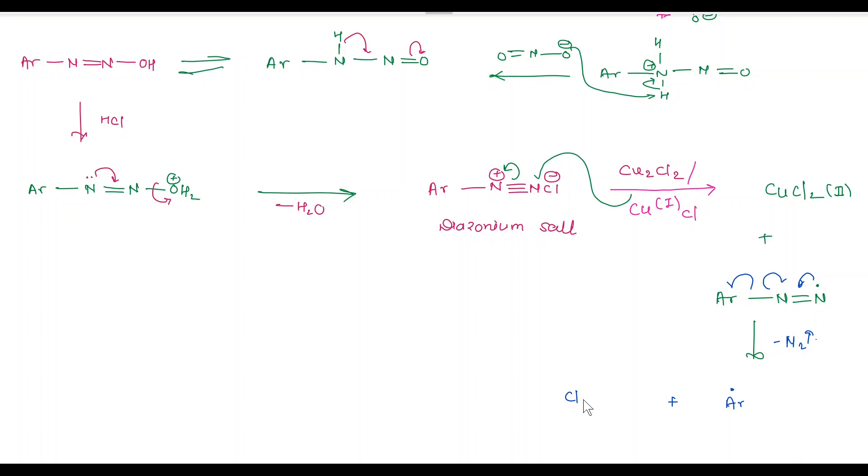Plus here we have CuCl2 in plus 2 oxidation state. So this ar radical abstracts this chloride radical. And here we get ar Cl, that is aryl chloride, plus copper in plus 1 oxidation state.